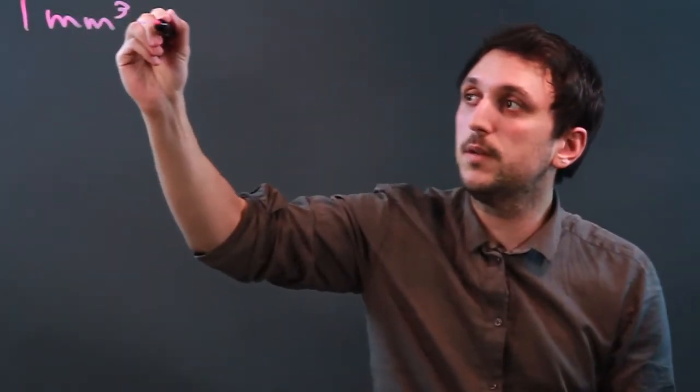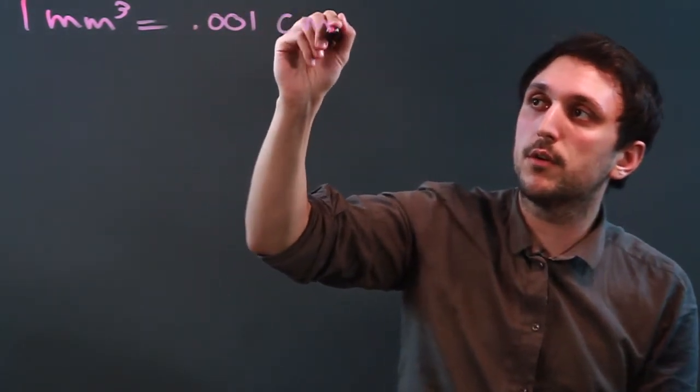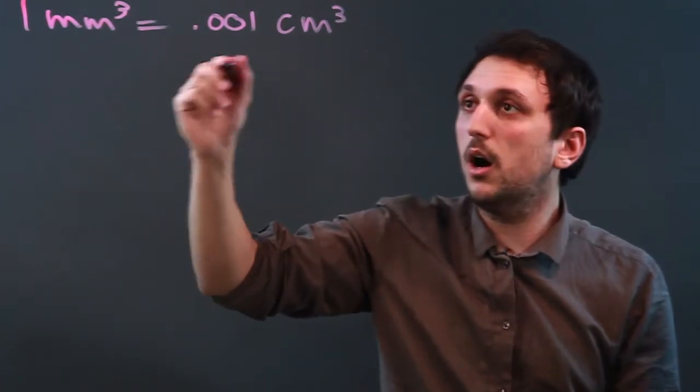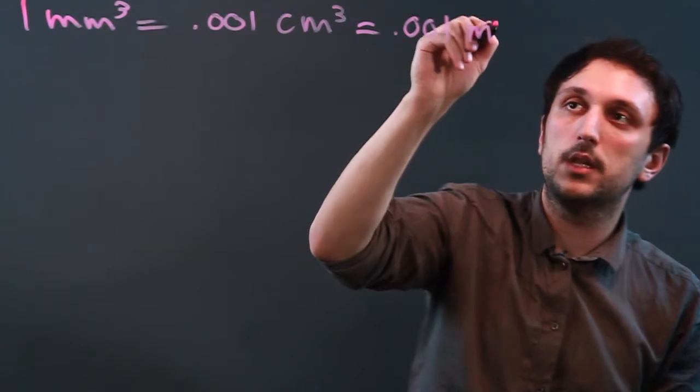Now, millimeters are a one-dimensional measure of distance, so we need cubic millimeters to measure volume. So, if you think about it, one millimeter cubed is equal to .001 centimeters cubed, which is a more standard metric of volume, or .001 milliliters.